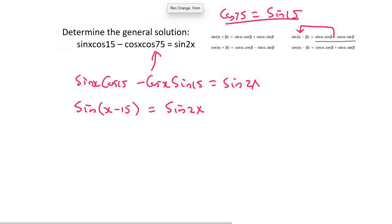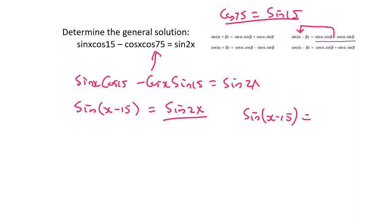Now some of you might be thinking: Kevin, there's a sin 2x — shouldn't we expand that using double angles? I understand why, and normally we would change it, but you wouldn't want to do that here. Let me show you why: if we did expand, we'd end up with x minus 15, an x, and another x, causing a complete imbalance. The angles are all different — it just doesn't work out nicely.